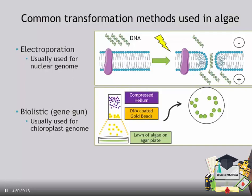There are two common transformation methods used in algae. The first is electroporation, which is usually used for manipulating the nuclear genome. DNA is mixed with the cells and an electrical potential is applied across them. This opens up pores in the cell membranes and allows the entry of DNA into the host. Since DNA is negatively charged, it moves toward the positive electrode, and the DNA can then exist as an extra-chromosomal episomal element or integrate into the host genome.